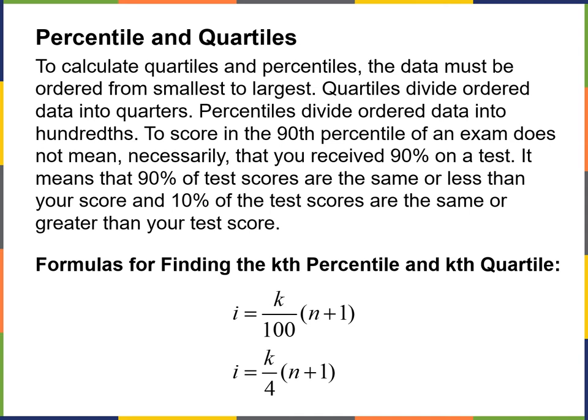Starting to look at percentiles and quartiles: your data needs to be ordered smallest to largest. Quartiles divide ordered data into quarters — 25%, 50%, 75%, and 100%. Percentiles divide ordered data into hundredths. Here's the formula to find whatever percentile and whatever quartile you're looking for. You can use Excel or JASP to find the percentiles and quartiles on your data — there are resources available to calculate those.